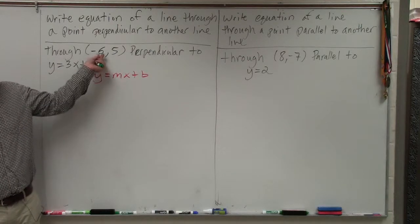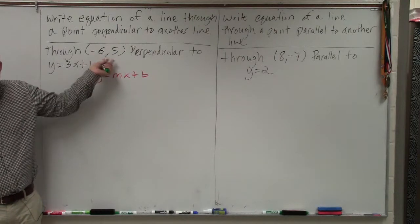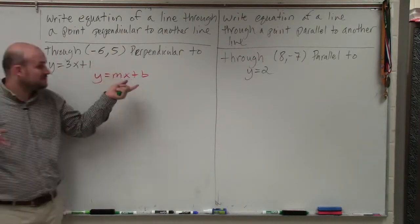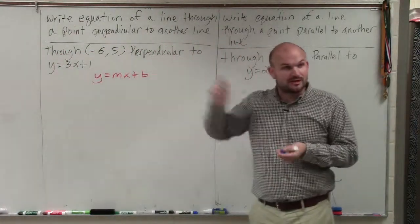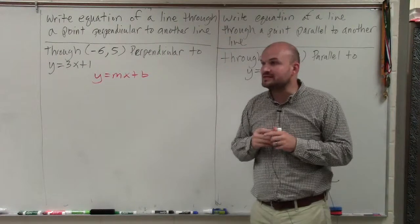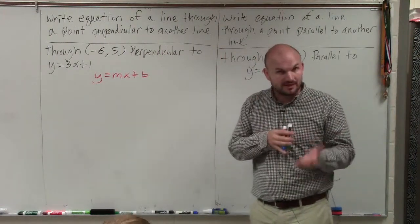Now in this case, our point - remember, x is not 0, so we don't have the y-intercept. This is just a point that the line goes through. And we don't even have the slope. We just have a line that is perpendicular to it. So we have to remember how perpendicular lines relate to each other, especially how their slopes are related.